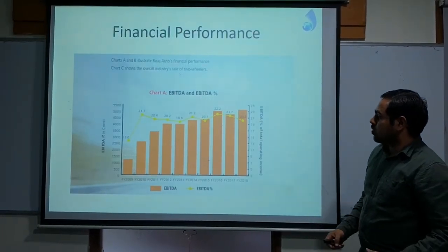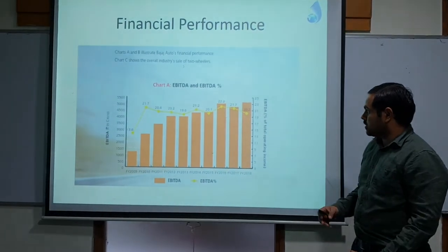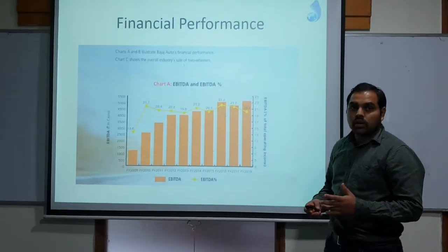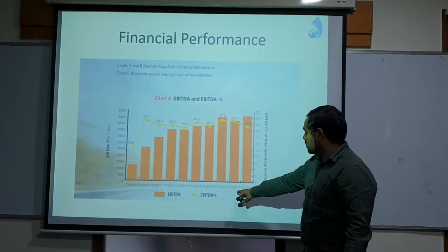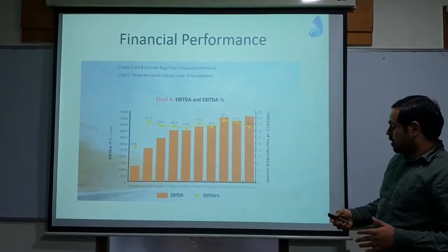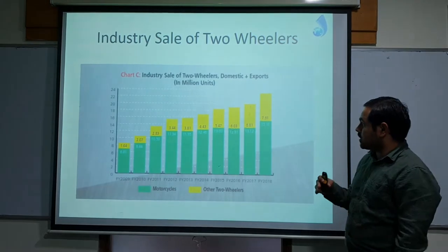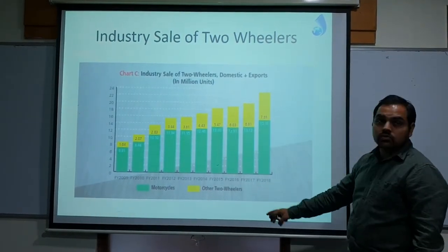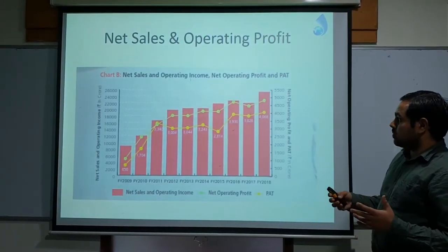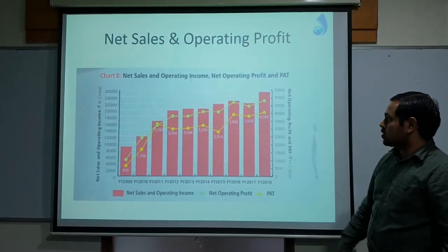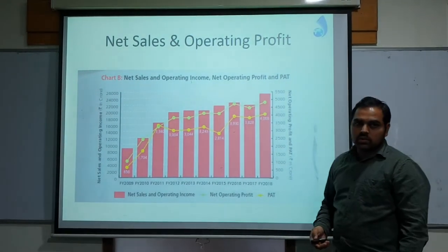These are the financial performance figures over the last nine years. The first is EBITDA — Earnings Before Interest, Tax, Depreciation and Amortisation — which mainly explains how well the industry operates. It shows EBITDA is continuously increasing, with only a dip in 2017. These are also the industry sales figures for the domestic market as well as exports for motorcycles and other two-wheelers, continuously increasing but at a sluggish rate. Financial metrics including net sales, operating income, net operating profit and profit after tax are also increasing at a sluggish rate.